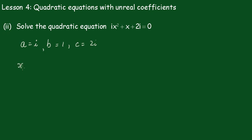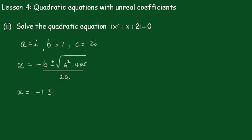The formula: x equals minus b plus or minus square root of b squared minus 4ac, all over 2a. So x equals minus 1 plus or minus square root of b squared, and b squared is 1 minus 4 times a, which is i, times c, which is 2i, all over 2i.